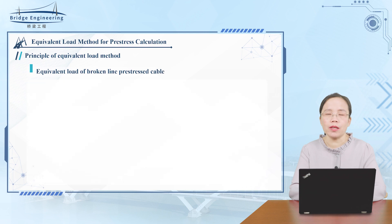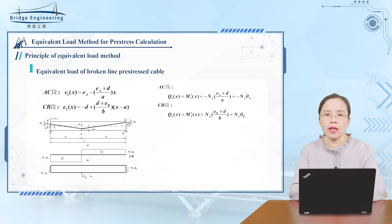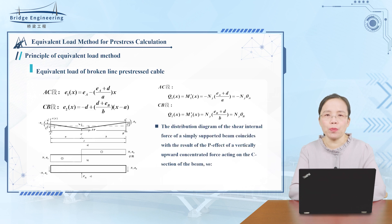Equivalent load of broken pre-stressed cables. According to the same principle, the cable force equation with a broken-line cable can be written as shown in the figure. According to this formula, the shear force distribution diagram of this simply supported beam can be drawn, and it is exactly consistent with the result of a vertically upward concentrated force P acting on section C of the beam, which can be expressed by the following formula.